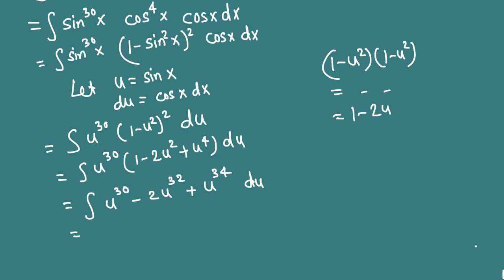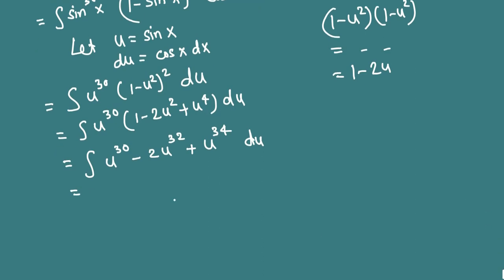Now integrate term by term. Integration of u^30 is u^31/31 - 2u^33/33 + u^35/35 + c.